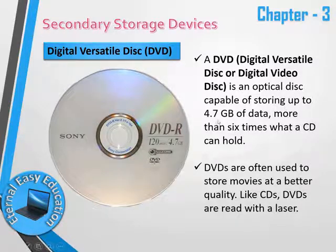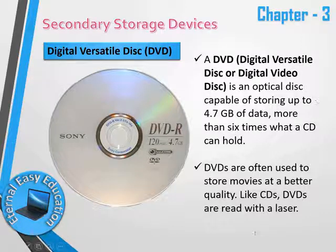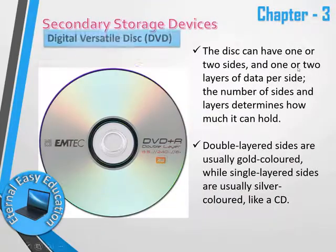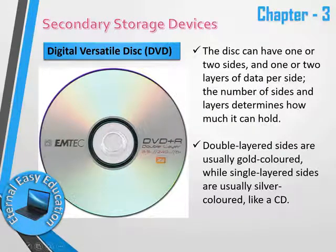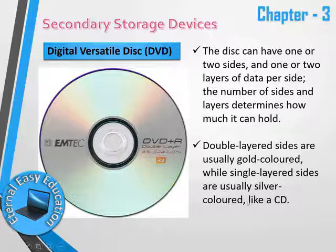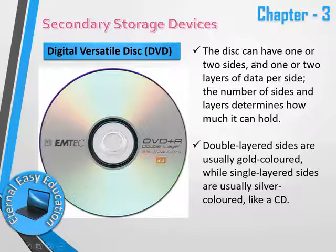A standard single-layer DVD has a capacity of 4.7 GB, while some hold up to 6.7 GB. A double-layer DVD doubles the capacity. The double layer uses a gold layer and a single silver layer. This gives DVD a much higher capacity compared to a CD.